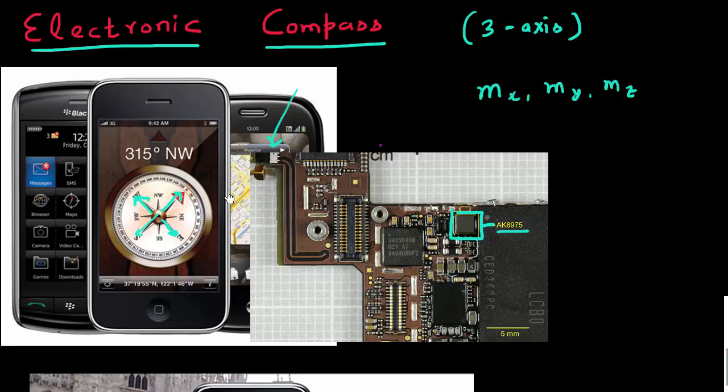Now one might wonder why do I need all three axes? Because if I look at the analog version of a compass, usually I hold it flat with respect to the ground, and I only need to resolve this along the X and Y axis, not the Z axis.